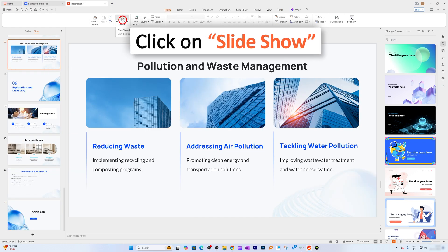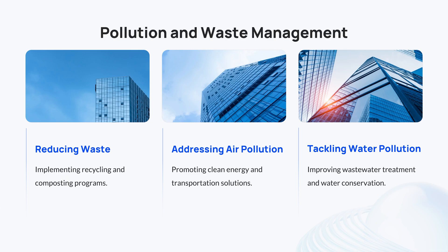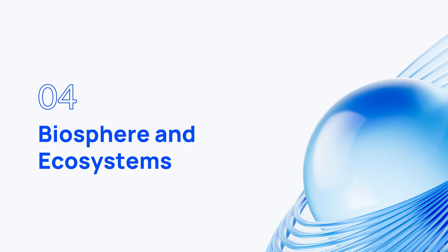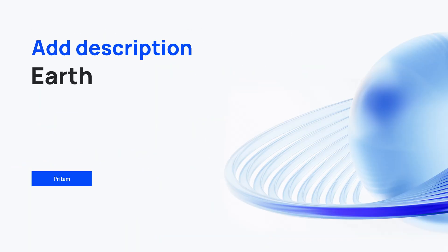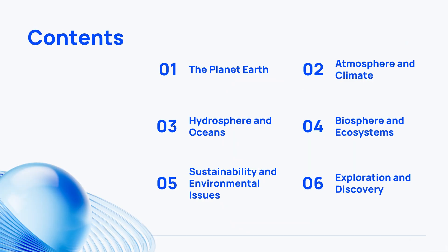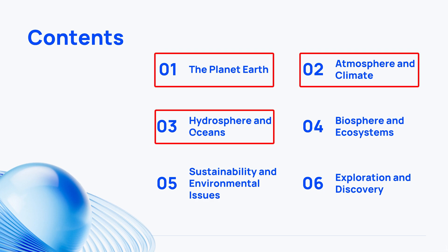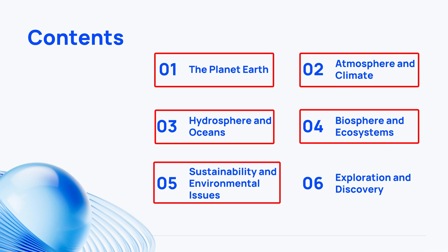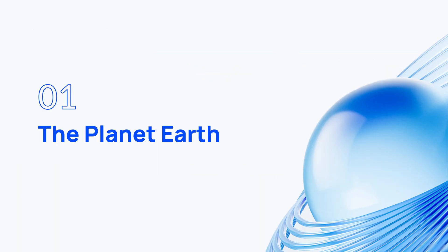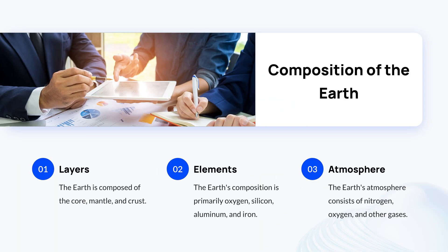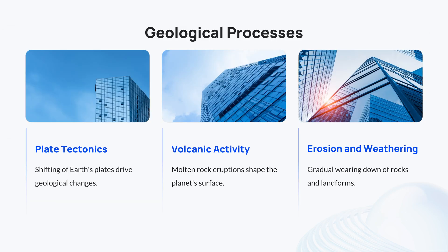We are at slide 27, so let me jump to the first slide. The content slide shows six aspects: Planet Earth, Atmosphere and Climate, Hydrosphere, Biosphere, Sustainability, and Exploration. The images chosen by AI may not always be ideal, but the content itself is really nice.